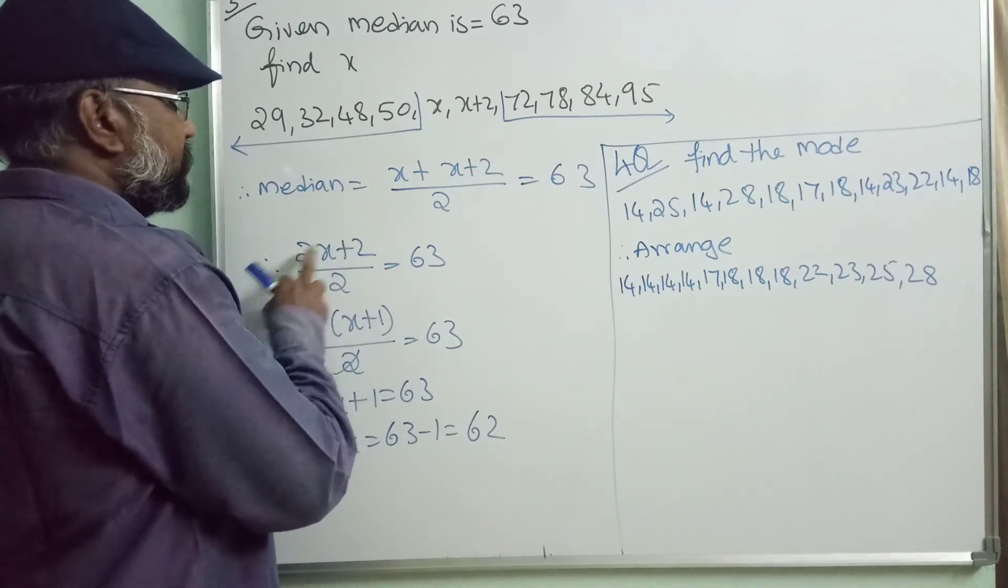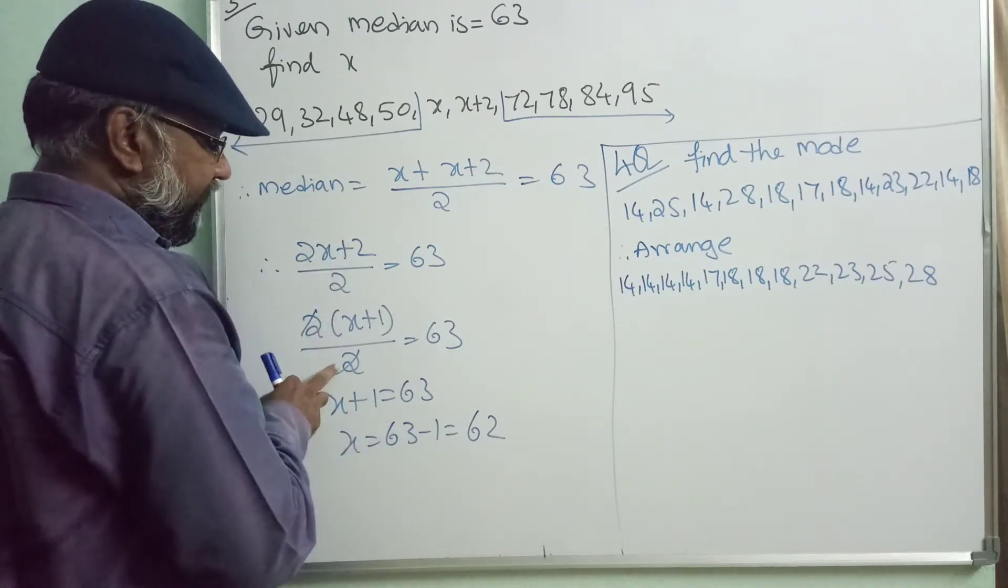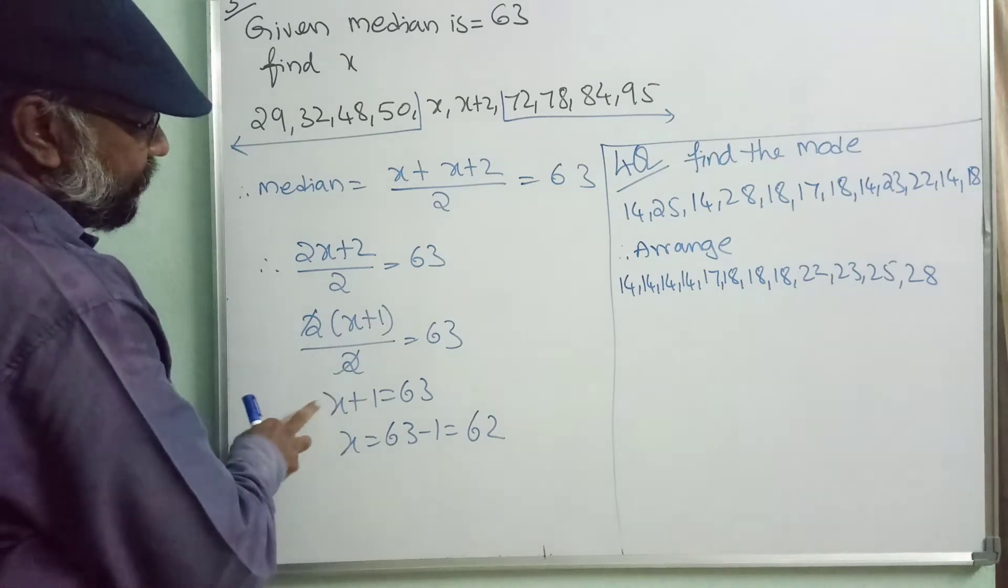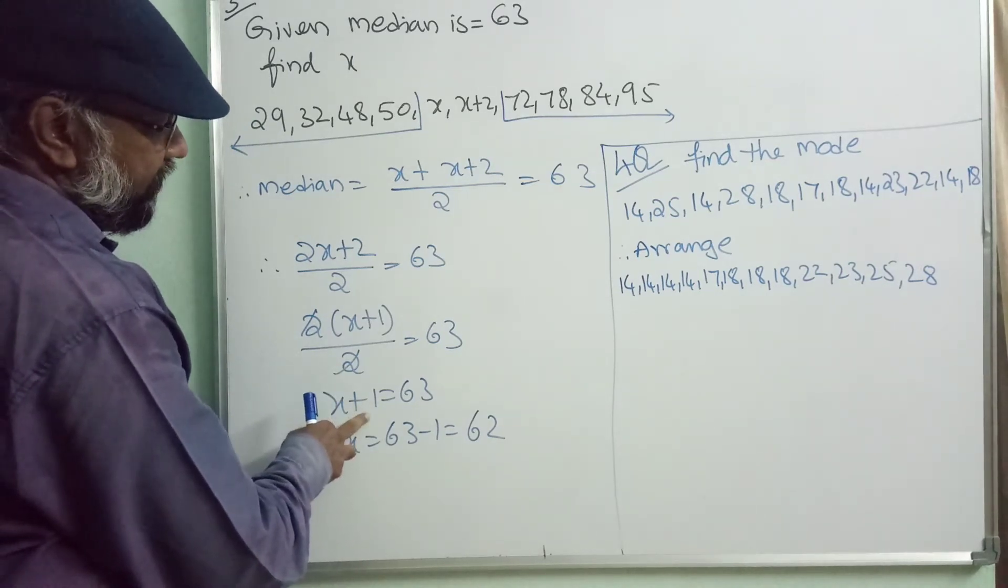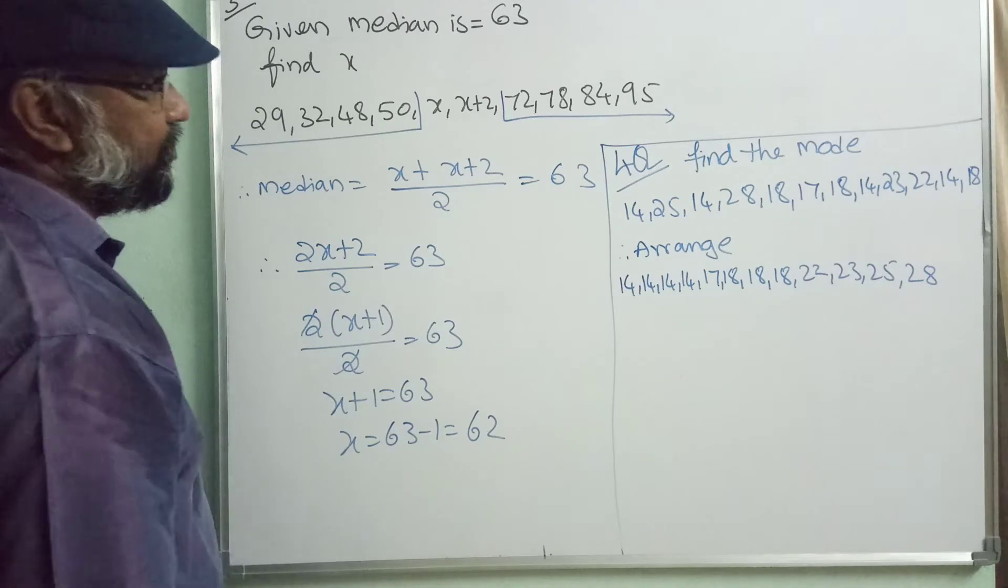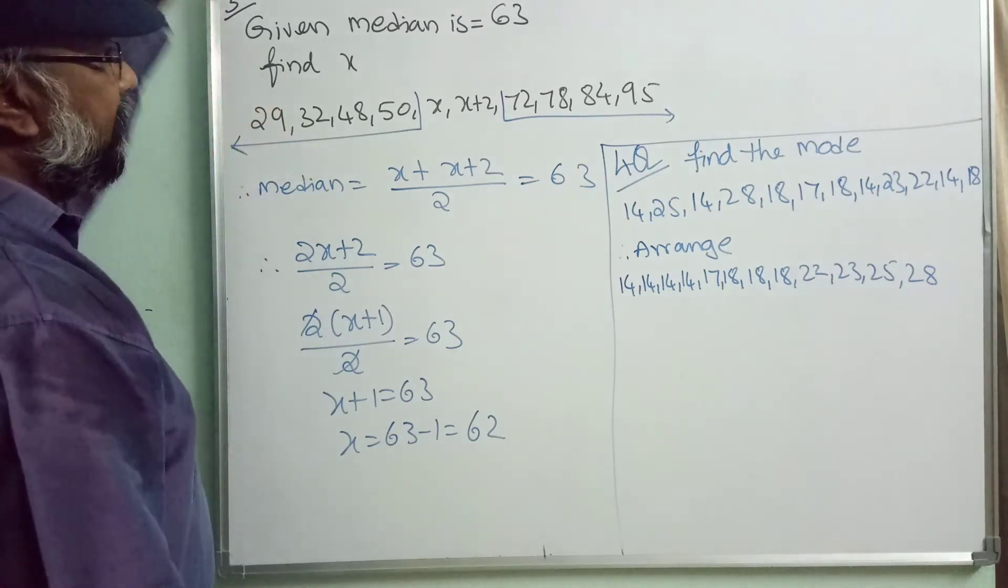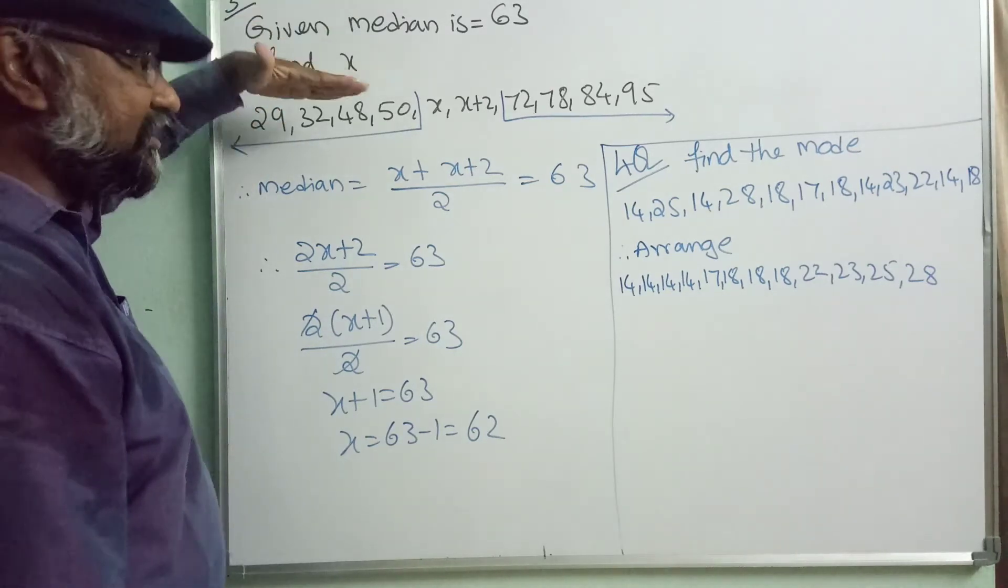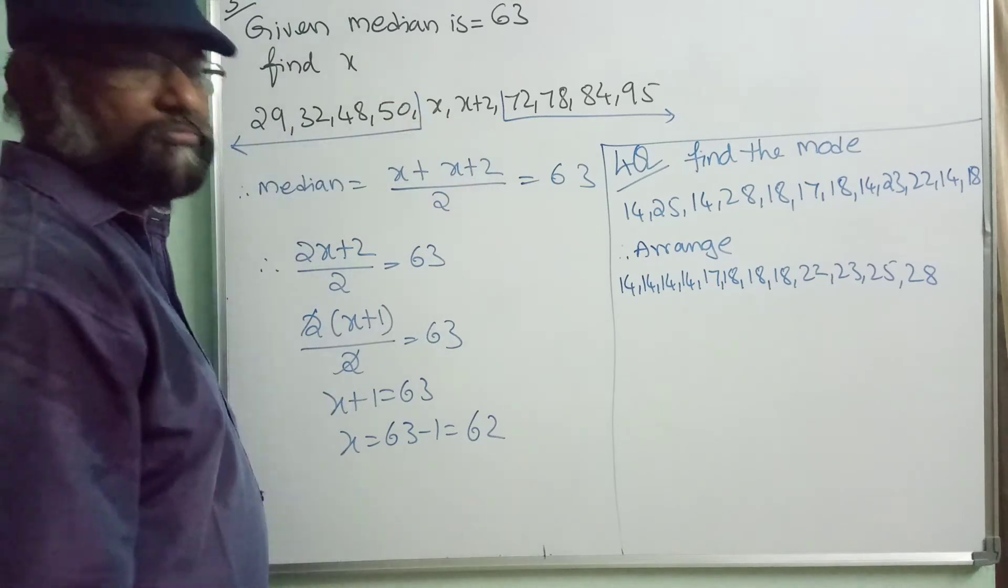So just x plus x plus 2, take 2 common and cancel here. So x plus 1 is equal to 63, x is equal to 62. So median is given, the answer is given, but the observations were missed.